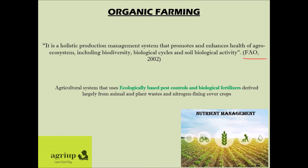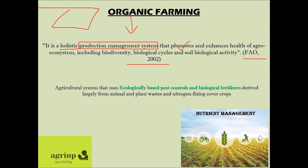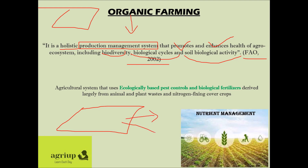First of all, to quote the definition given by FAO — the Food and Agriculture Organization — in 2002: what is organic farming? It is defined as a holistic production management system that promotes and enhances the health of the ecosystem, including biodiversity, biological cycles, and soil biological activity. So the terminology is clear.